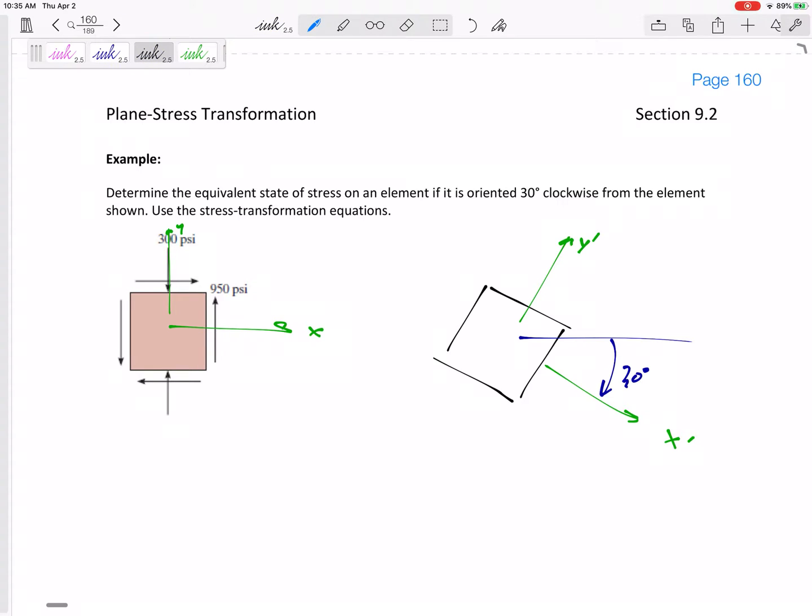So here's my thing. What is the new sigma x prime? What is the new sigma y prime? And what is the new state of stress tau prime or tau x prime y prime?